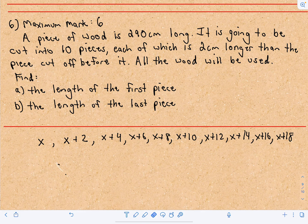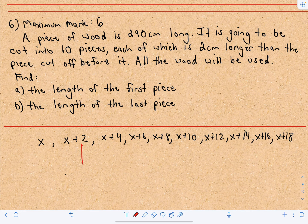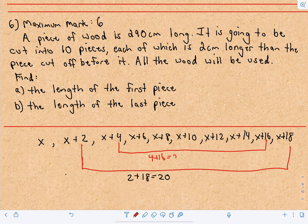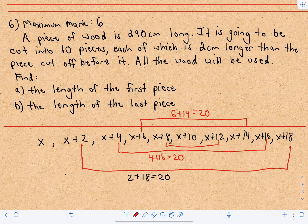Now we just add these up. A little trick: rather than adding 2 plus 4 plus 6 plus 8 sequentially, add the outer parts together. Notice 2 plus 18 gives us 20. Then 4 plus 16 also gives us 20. Then 6 plus 14 — also 20. And 8 plus 12 — also 20. That's four 20s, and then we have the 10 left over.